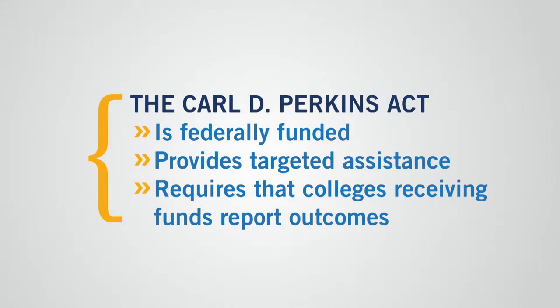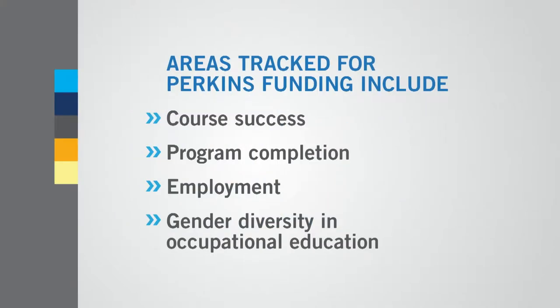At the federal level, we have the Carl D. Perkins Program. It is a long-standing program that provides targeted assistance to CTE. Most colleges receive these funds and must report outcomes. Some of the areas that are tracked include course success, program completion, and employment. This particular funding stream also has a unique measure that looks at gender participation in occupational areas, highlighting the need for gender diversity in occupations.